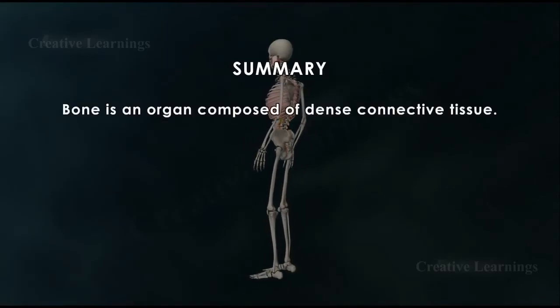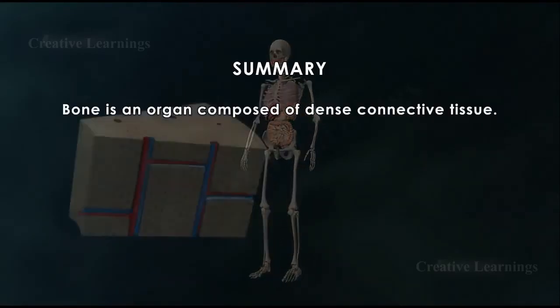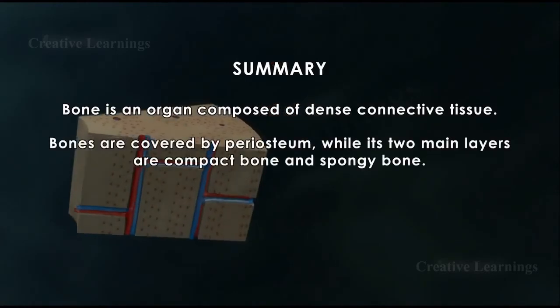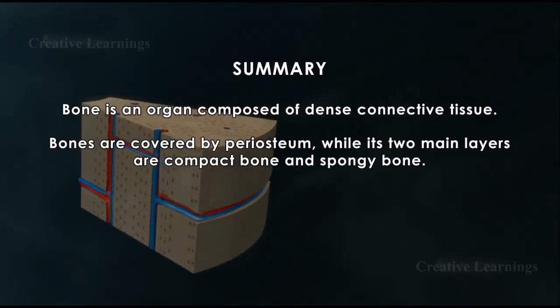Summary: Bone is an organ composed of dense connective tissue. Bones are covered by periosteum, while its two main layers are compact bone and spongy bone.